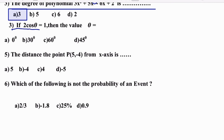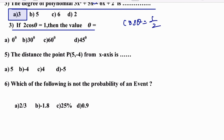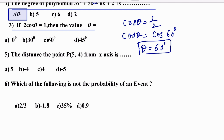If 2cosθ = 1, find the value of θ. Using the formula: cosθ = 1/2. We know cos 60° = 1/2, so θ = 60°. Option C is the right answer.